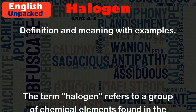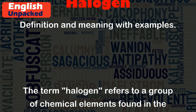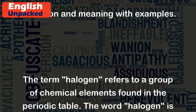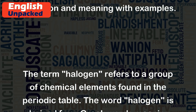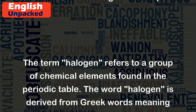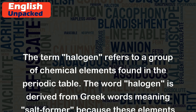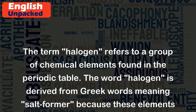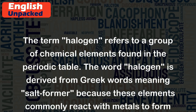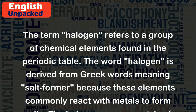The term halogen refers to a group of chemical elements found in the periodic table. The word halogen is derived from Greek words meaning salt former.